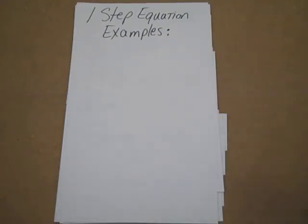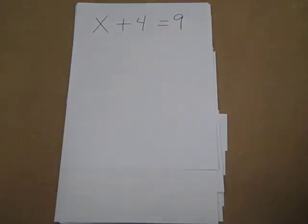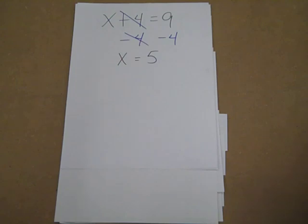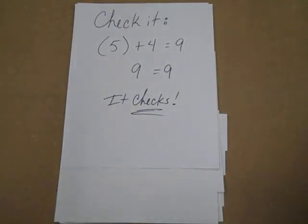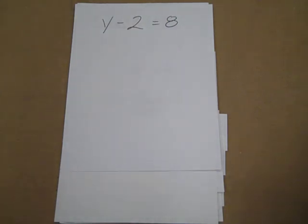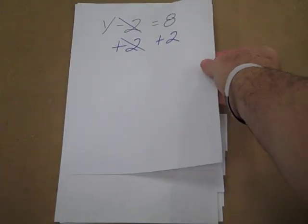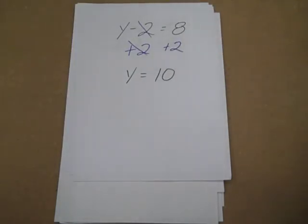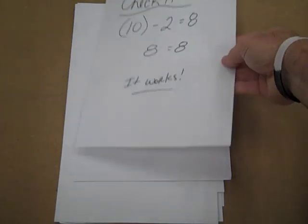Some sample equations to go through. For our one-step equation, we're going to get rid of the 4 on both sides — that equals 5. If we check it, it checks out, so you actually did your work right and got the answer right. What I'm going to be looking for is the work in this problem — that's the most important. For our second one, again we're getting rid of the 2 by doing the opposite operation to both sides. When we do that, we get our answer, and we want to make sure that it works. It checks.